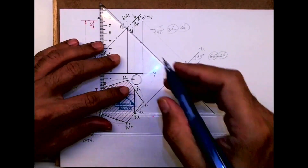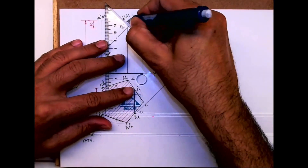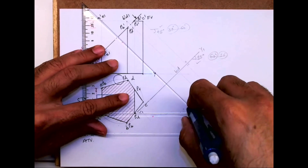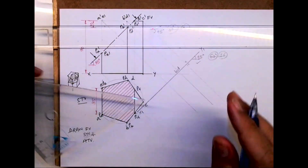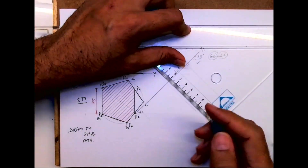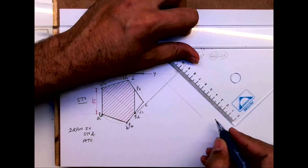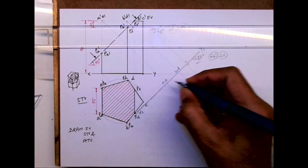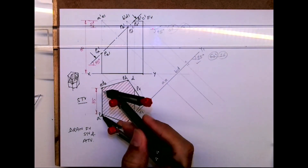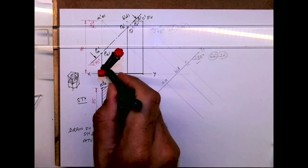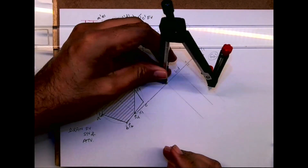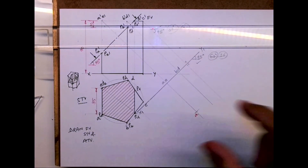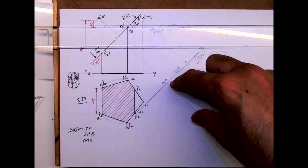Draw a line from C dash, and the same way draw lines from B dash, D dash, and A dash E dash — we are taking the top points. Now we will take the XY distance to point A and cut it from X1Y1. This point is A.